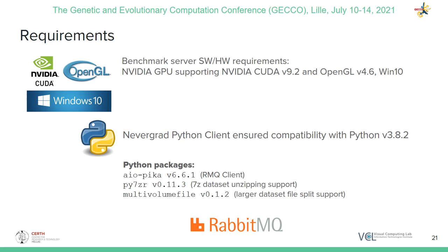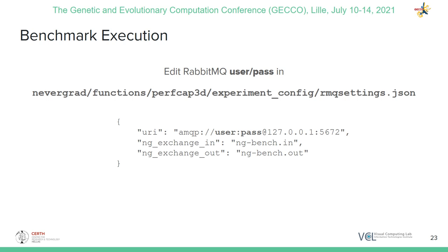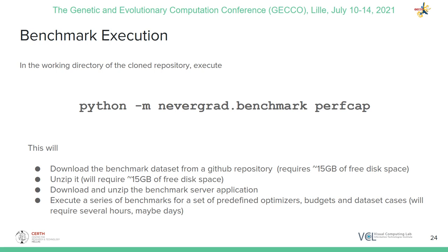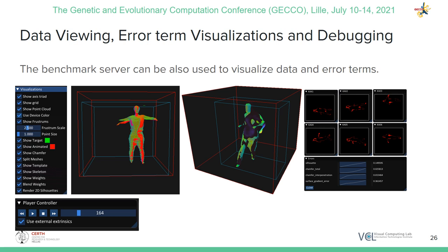In your environment you need to have a RabbitMQ server accessible from both the NeverGrad Python Client and the Benchmark Server. To install the Benchmark, use Git to clone the respective branch from our public repository. Next, you need to specify login details for your RabbitMQ server in the respective configuration file. Finally, execute the NeverGrad Benchmark via the NeverGrad Python module invocation command. This will download the benchmark dataset and server, and execute a series of predefined benchmarks. Parameterizing and creating new benchmark cases can be accomplished via editing configuration files. The Benchmark Server executable, when run with appropriate flags, can also be used to visualize data and error terms.